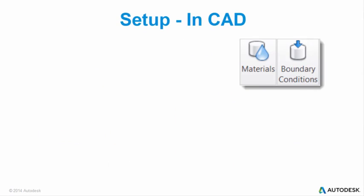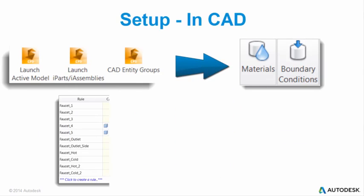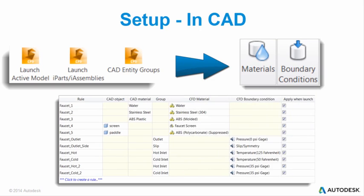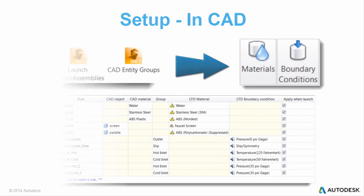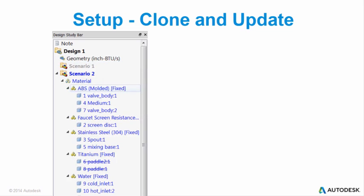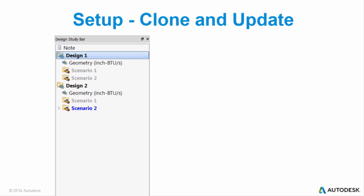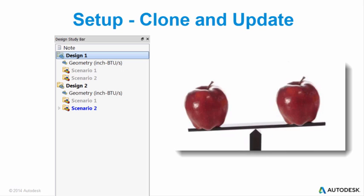The setup starts in CAD where you can assign materials and operating conditions using the CAD embedded tools and automate with user-defined setup rules. Your virtual test setup is then cloned to create a new run scenario or updated with a modified CAD model to run a test on a design alternative. Cloning ensures that each simulation is set up the same, essential for accurately ranking your design alternatives.